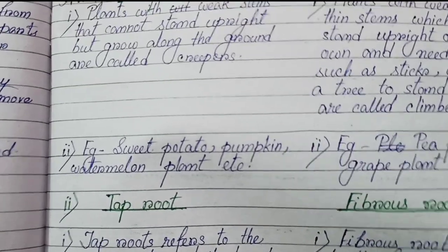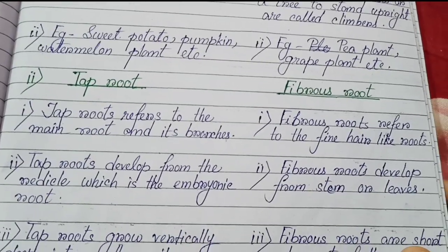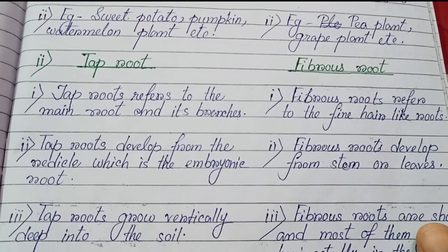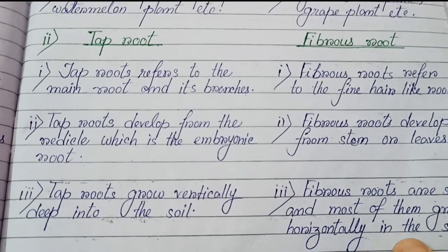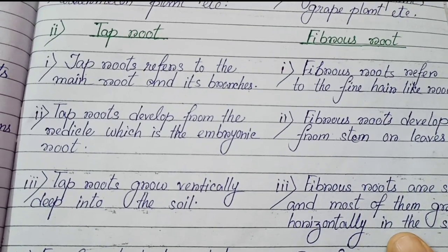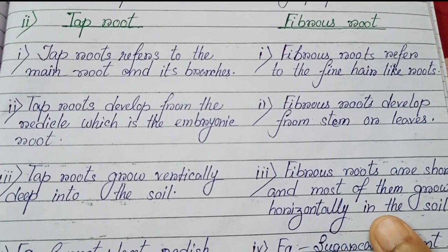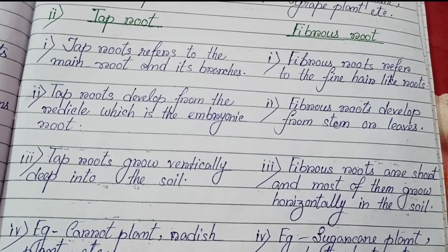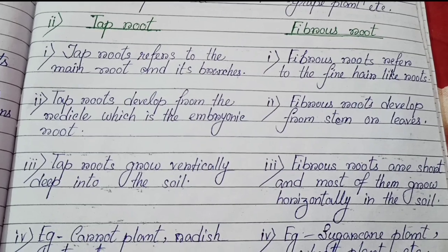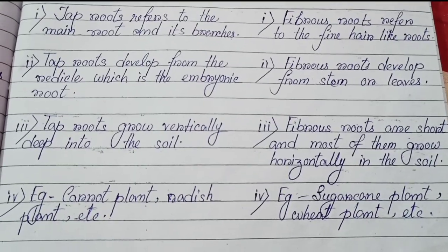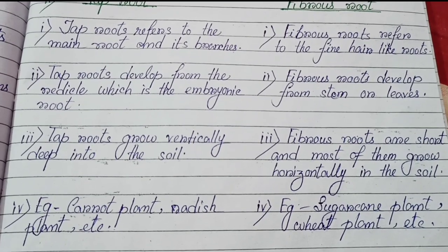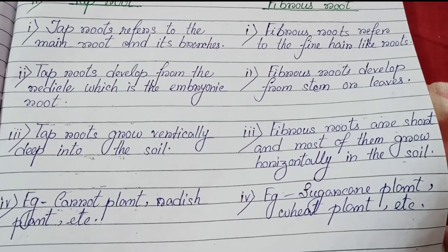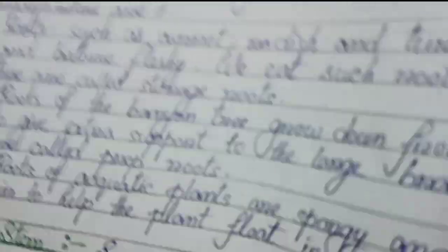Differentiate between tap root and fibrous root. Tap root: (1) refers to the main root and its branches; (2) develops from the radicle, which is the embryonic root; (3) grows vertically deep into the soil; (4) examples are carrot plant, radish plant, etc. Fibrous root: (1) refers to fine hair-like roots; (2) develops from stems or leaves; (3) short and most grow horizontally in the soil; (4) examples are sugarcane plant, wheat plant, etc.